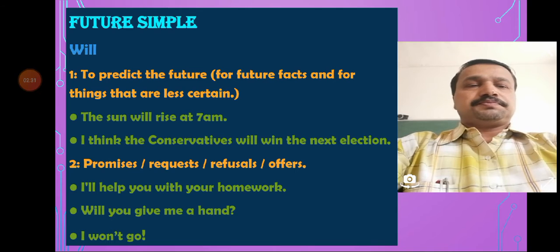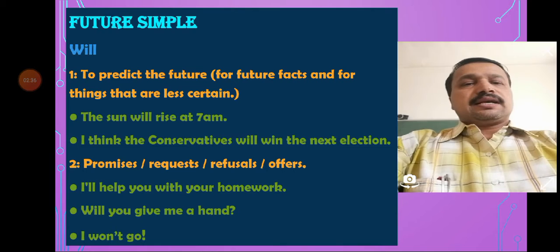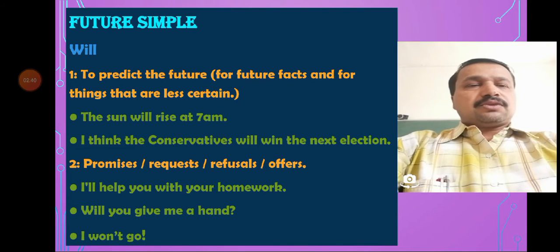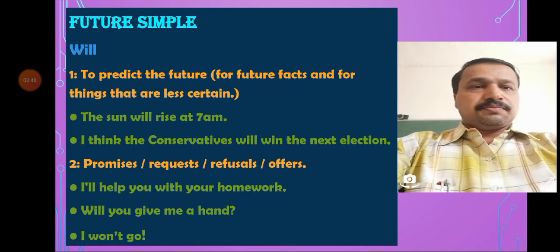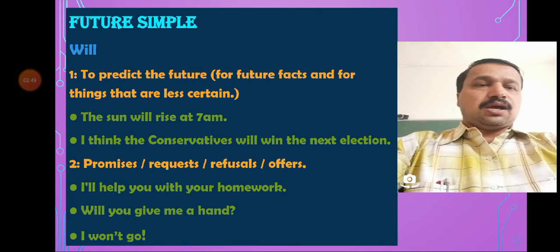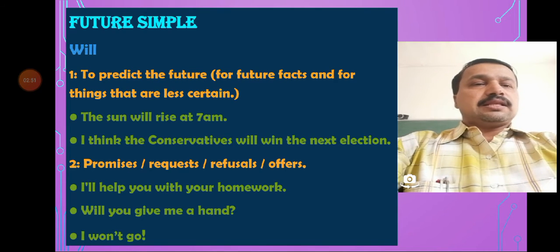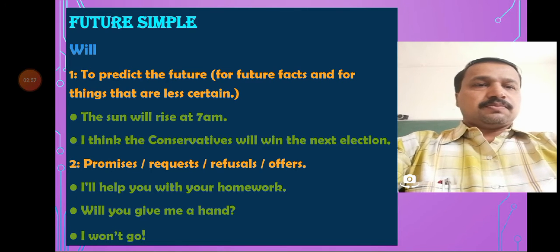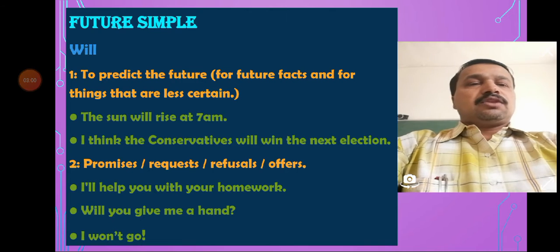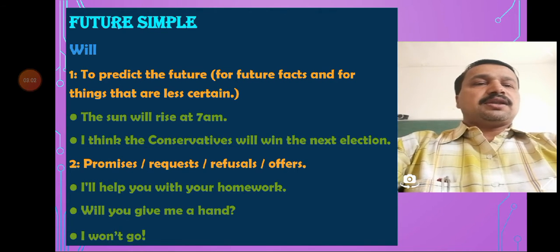When we state a sentence in simple future, it gives the meaning that something is possible to happen in future. Second use: promise, request, refusals or offers. This use is applicable when will is used as a modal auxiliary. When we take the case of will or shall, shall is used with the subjects I and we in the normal case, and will is used with the rest of the subjects. If we interchange them, it will give a different meaning.